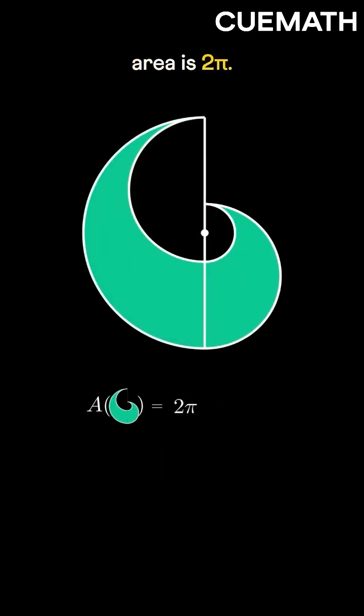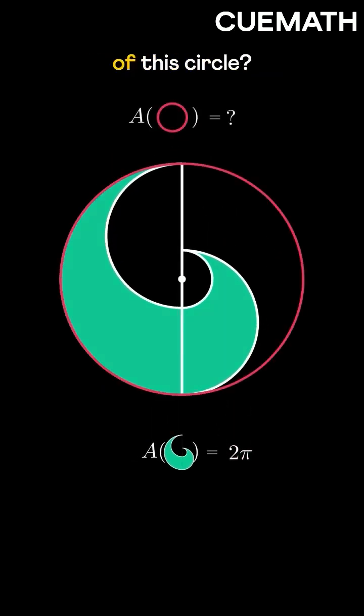So the shaded area is 2 pi. Given this area is 2 pi, what's the area of this circle? Put it in.